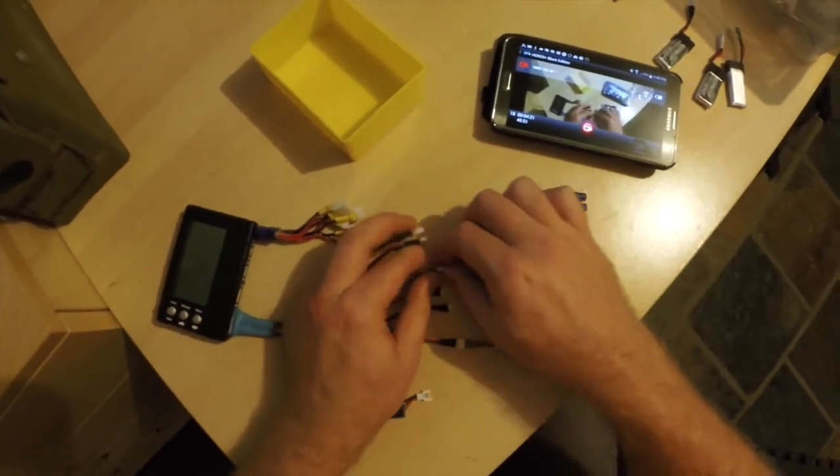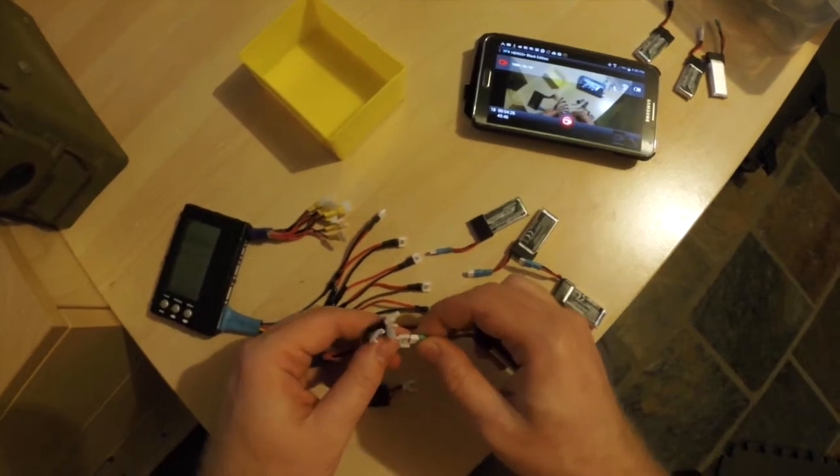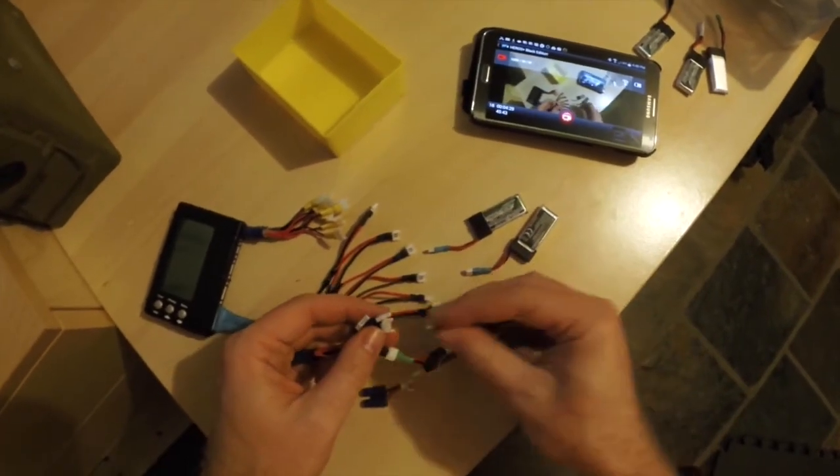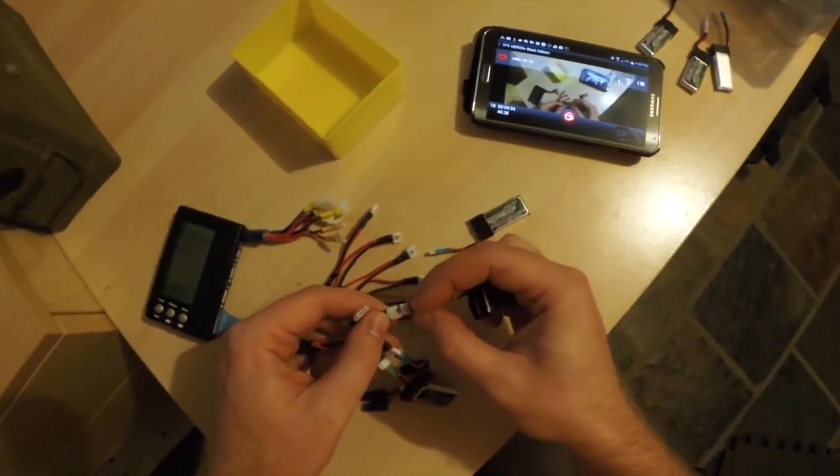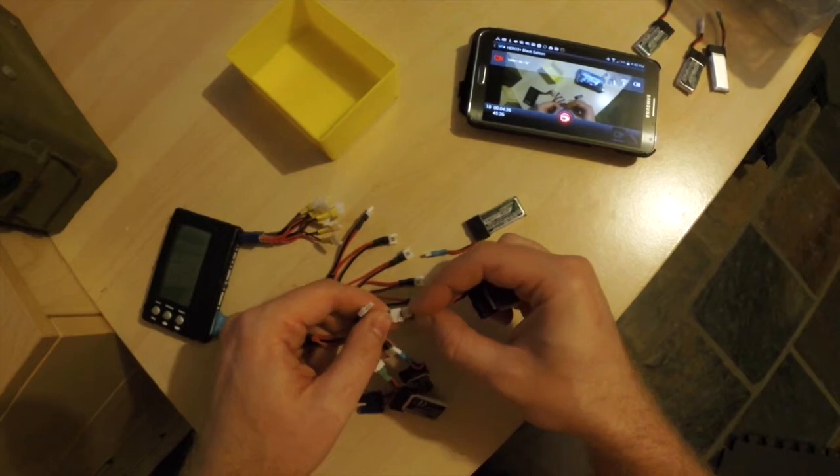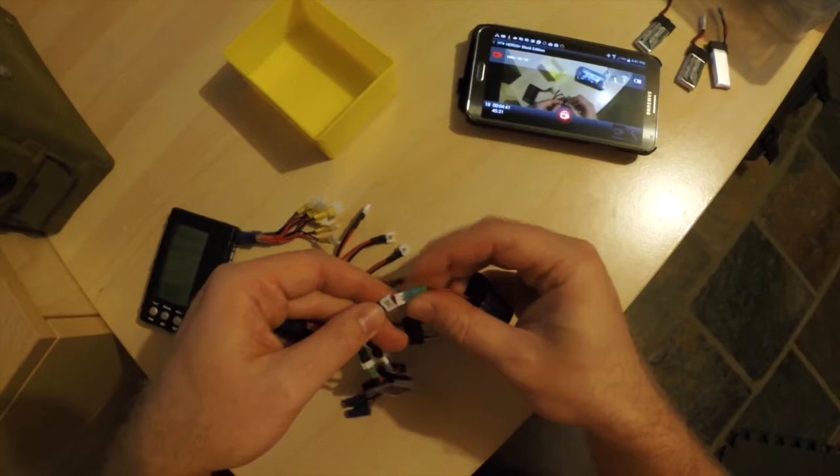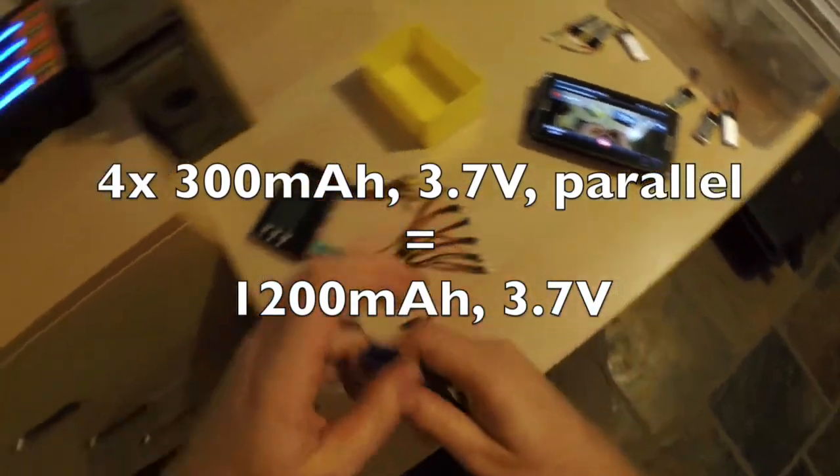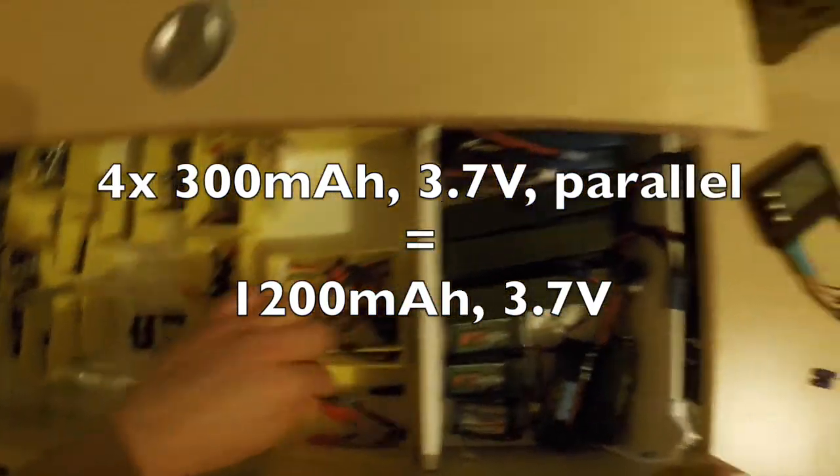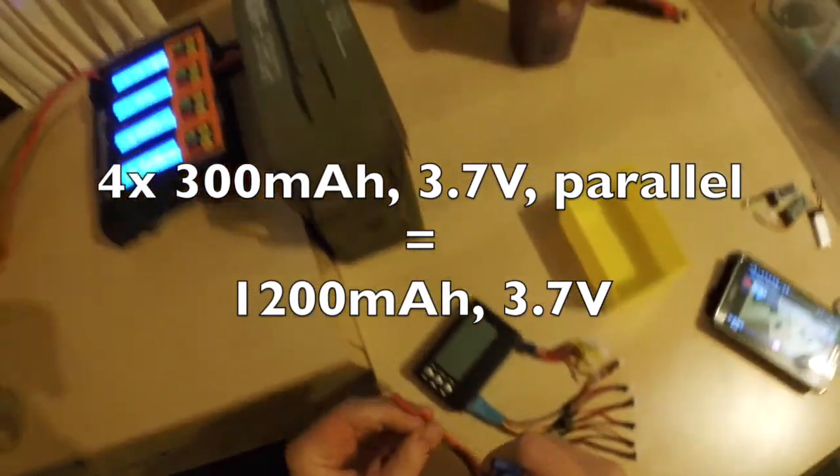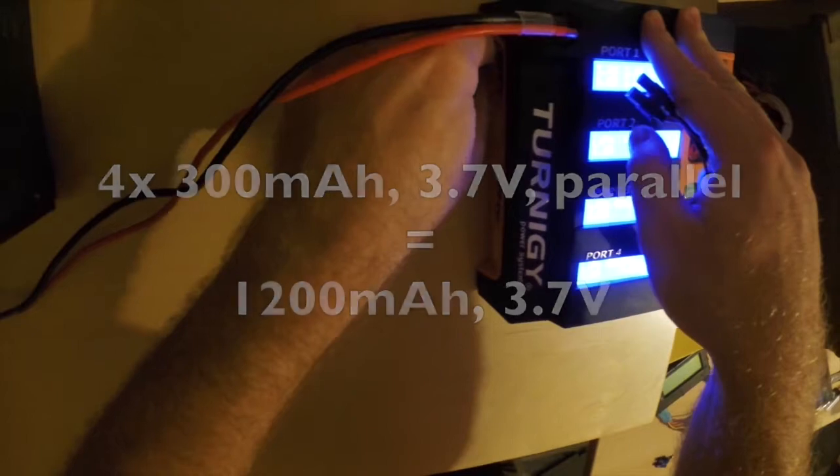So that's 0.14 of a volt between the lowest and the highest voltage. So that's getting towards the limit of what I'm feeling comfortable with for parallel charging, but yeah, should be good. So connecting four 300 milliamp single cell packs in parallel basically gives me a single cell, nominal voltage 3.7 volts, larger pack with 4 by 300 equals 1200, 1200 milliamps capacity.